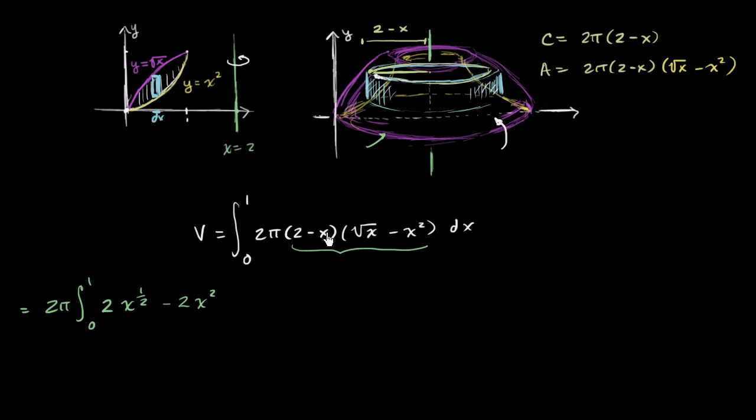And then we have negative x times the square root of x. Well, that's x to the first times x to the 1/2. That's going to be negative x to the 3/2 power. And then we have negative x times negative x squared. That's going to be positive x to the third power. And all of that dx.